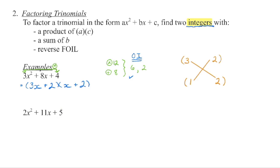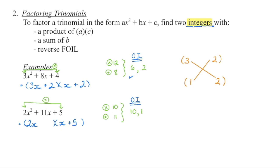We're going to begin by looking for those two numbers. What two numbers are going to multiply to give us that A times C product? So 2 times 5 gives us a product of 10. What two numbers add to give us that B value of 11? The two numbers that multiply to 10 and add to 11 are 10 and 1. Those form the outside and inside products. So we set up our brackets: what number times what number gets us back to that 2x squared? 2 is a prime number, so we're going to have 2 and 1. Then 2 times 5 gives us the outside product, and 1 times 1 gives us the inside product. The last term is a check: 5 times 1 gives us 5. FOIL this out: 2x squared, 10x plus 1x is 11x, and 1 times 5 gives us 5.